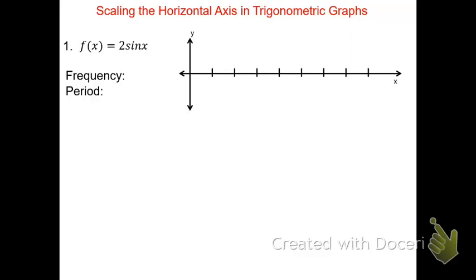This video will explain how to scale a horizontal axis for trigonometric graphs. We'll look at two examples in degrees, and then look at examples in radians. The first function, f of x equals two sine of x, has a frequency of one.